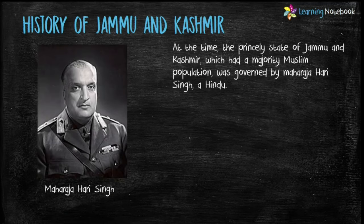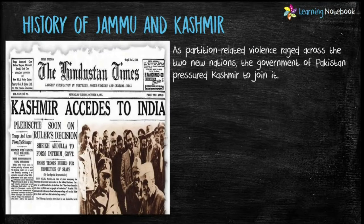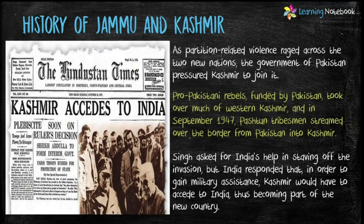At this time the princely state of Jammu and Kashmir, which had a majority Muslim population, was governed by Maharaja Hari Singh, a Hindu. Unlike most princely states which aligned with one nation or the other, Maharaja Singh wanted independence for Kashmir. To avoid pressure to join either new nation, Maharaja Singh signed an agreement with Pakistan that allowed citizens of Kashmir to continue trade and travel with the new country. As partition-related violence spread, the government of Pakistan pressured Kashmir to join it, so Pakistani rebels took over much of western Kashmir, and in September 1947 Kashmiri tribesmen streamed over the border from Pakistan into Kashmir.